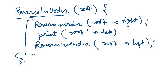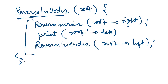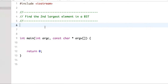We will not do the entire traversal to find the second largest element. For that, we can keep a counter, initialized to 0. Whenever we visit any node, we increment the counter, and when the count becomes 2, we print that element and stop. Let's see in running code how we can modify the reverse in-order traversal to find the second largest element.